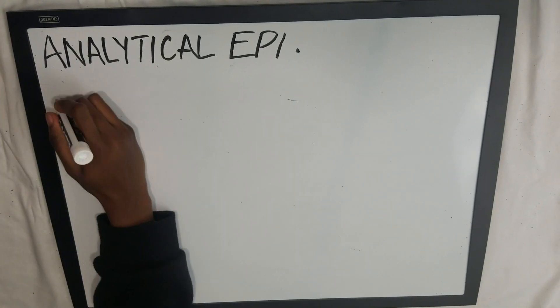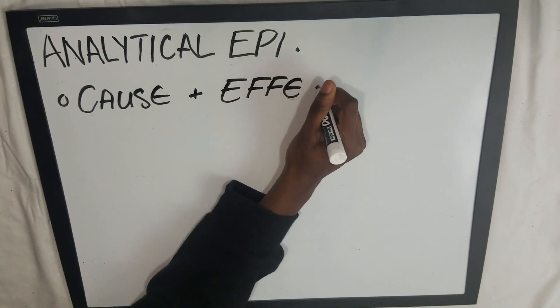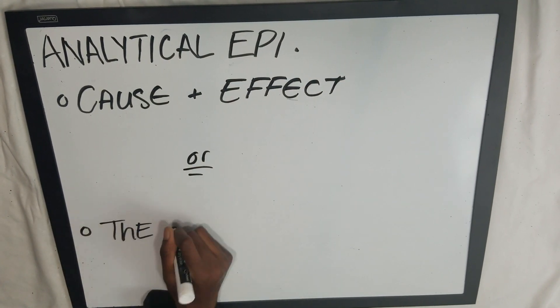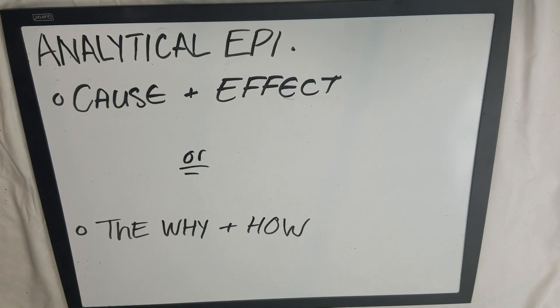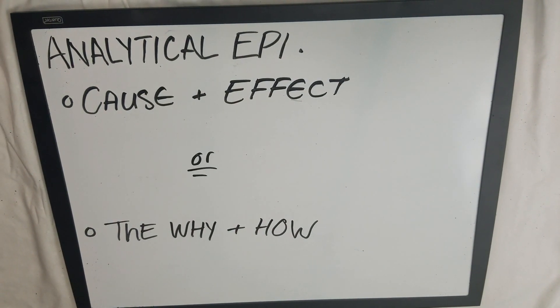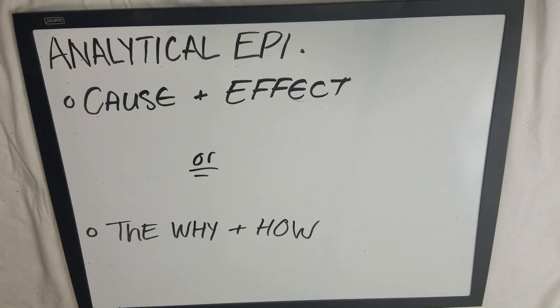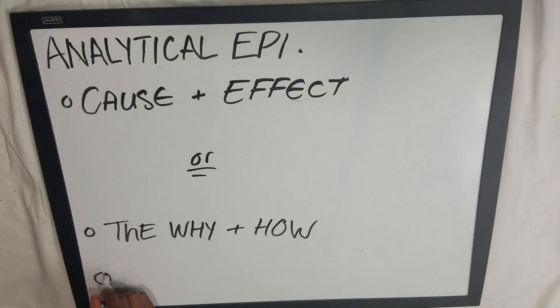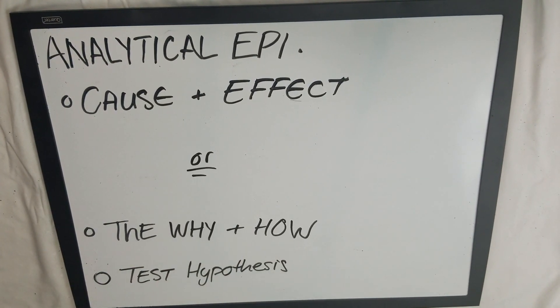The second approach that John used is analytic epidemiology, which is concerned with the research of the causes and effects or the why and how. He used analytic epidemiology to quantify the association between exposures and outcomes and to test hypotheses about causal relationships.